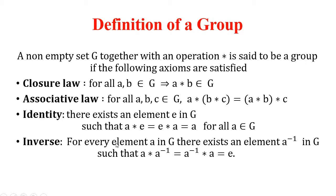The fourth property is inverse: for every element a in G, there exists an element a-inverse in G such that a star a-inverse equals a-inverse star a equals e. For example, with respect to addition, the inverse of 2 is −2, since 2 + (−2) = 0, which is the identity. With respect to multiplication, for a = 2, a-inverse is 1/2, since 2 × (1/2) = 1, which is the multiplicative identity.